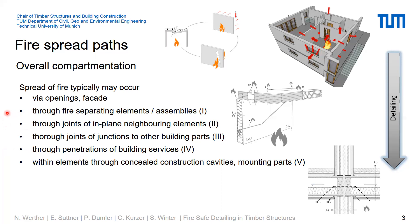Fire spread also occurs through the separating element itself when not designed properly, but also — and this is the main focus of today's presentation — via in-plane joints in neighboring elements and through joints to other building parts, like a wall-floor junction. The complexity of this topic becomes obvious when zooming in on such a detail, where you realize the joints, the gaps, the tolerances needed, and the potential risk, as well as which measures have to be taken to ensure fire safety.